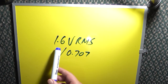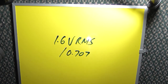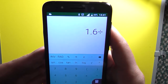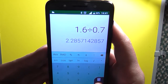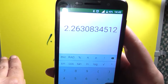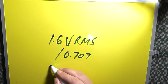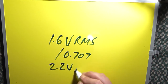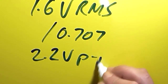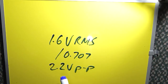So 1.6 divided by 0.707 gives 2.2 volt peak — I was off, it's 2.2 volt, not 3.2. So the actual input sensitivity of that amplifier is 2.2 volt peak, which means 4.4 volt peak to peak. That's the voltage you would set your DDS or signal generator to, to get the full output power specified in the amplifier's specifications.